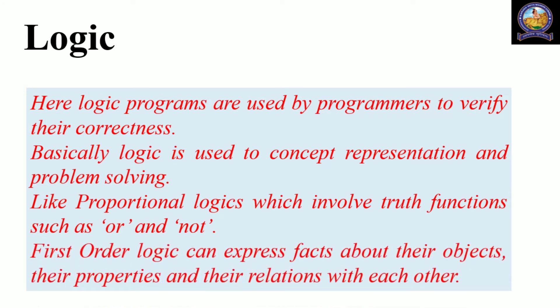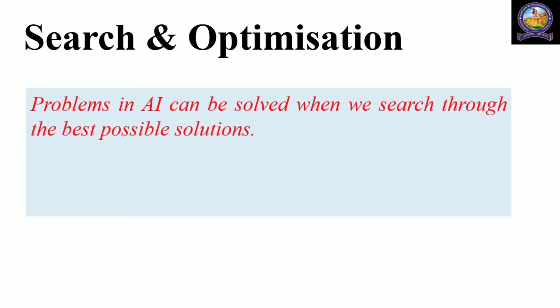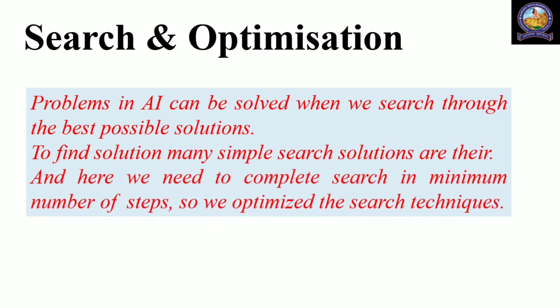First-order logic can express facts about objects, their properties, and their relations with each other. Search and optimization: problems in AI can be solved when we search through the best possible solutions. Many simple search solutions exist, and we need to complete the search in minimum number of steps, so we optimize the search techniques.